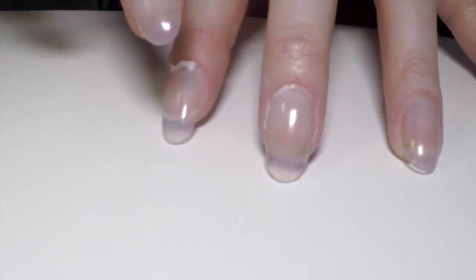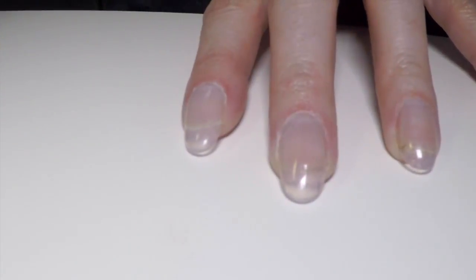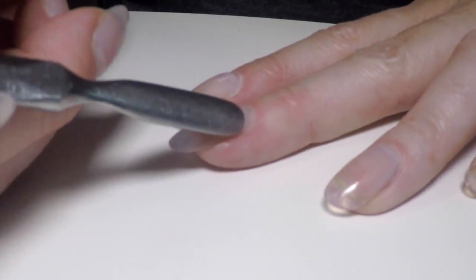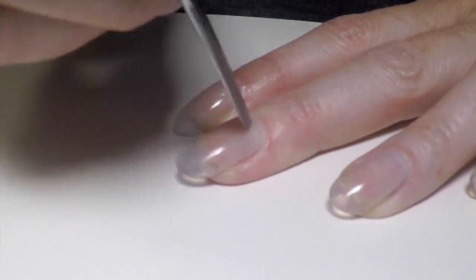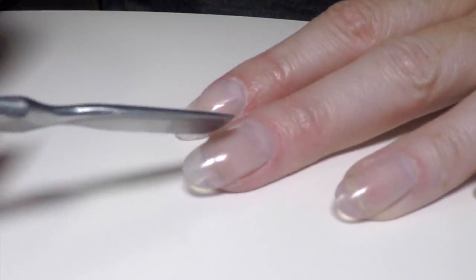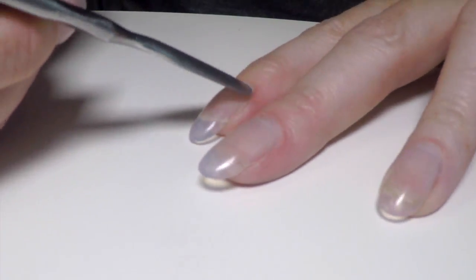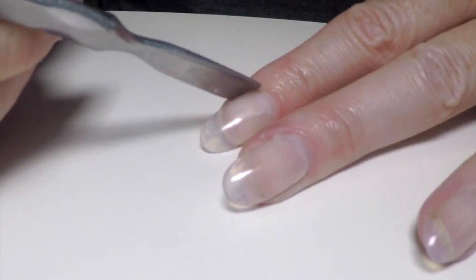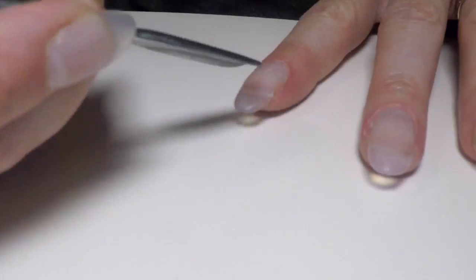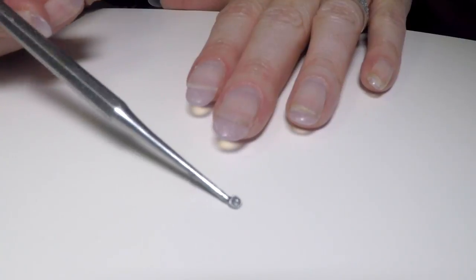I'm going to start by using CND's Cuticle Eliminator. It's like shampoo for your nails. It scrubs the cuticles and breaks up all the tissue. We're going to use this metal implement to push the cuticle back. Make sure you stay parallel to the nail plate. You can also use an orange wood stick if you have one.